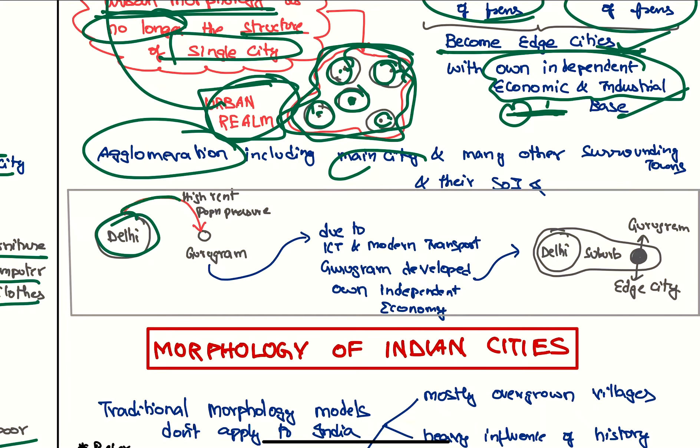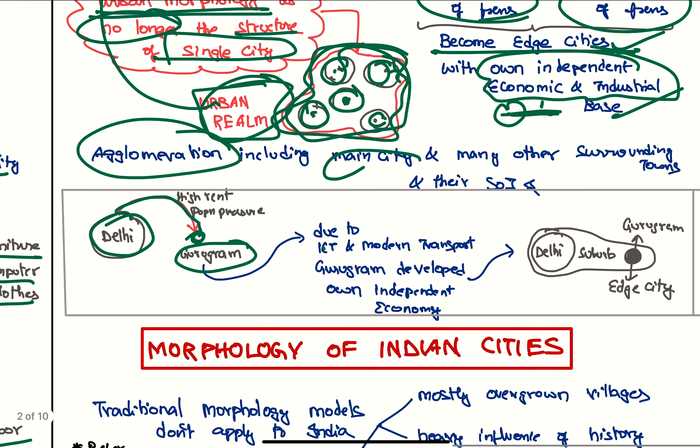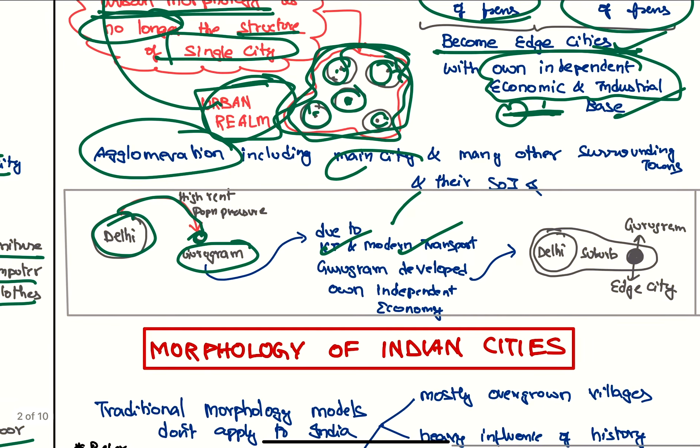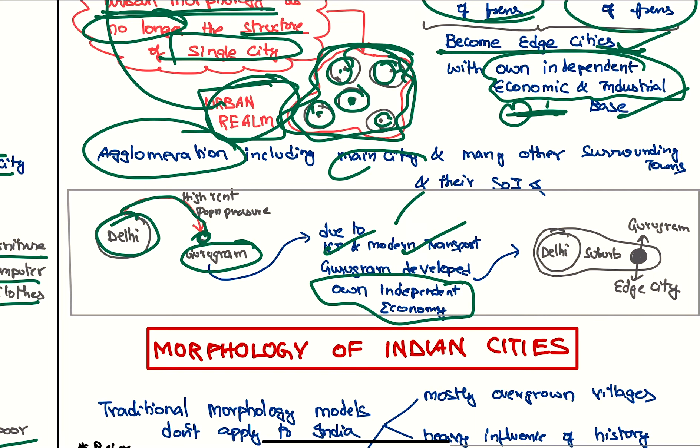The example is initially when there was Delhi, due to the high rent and population, people started moving to Gurugram and it developed as a suburb. But later, due to ICT and modern transport, Gurugram diversified and specialized in its functions and now it developed its own independent economy. So Delhi and Gurugram are now both cities, and the areas in between are the suburbs now.